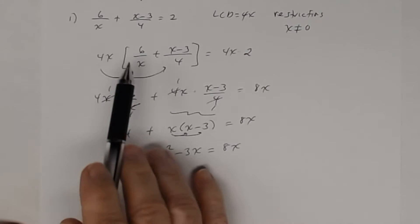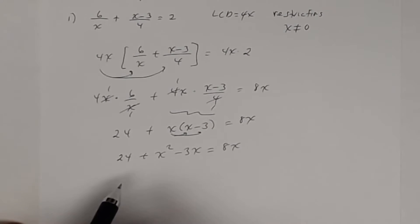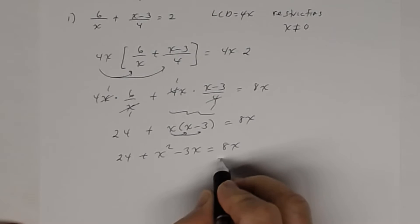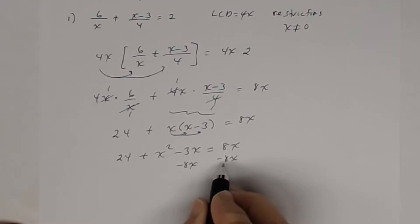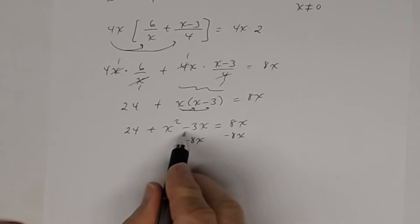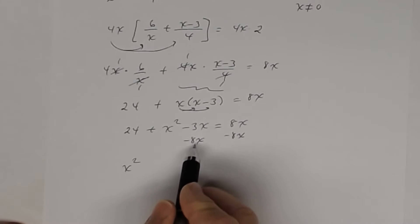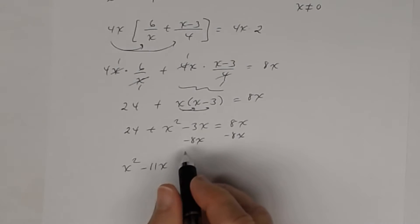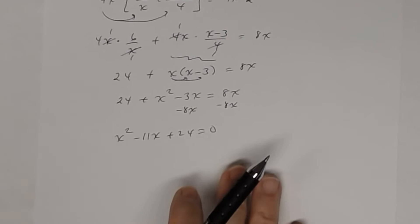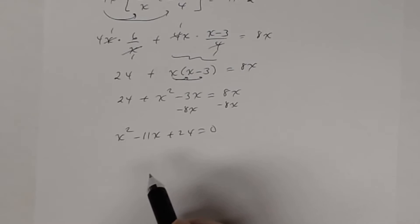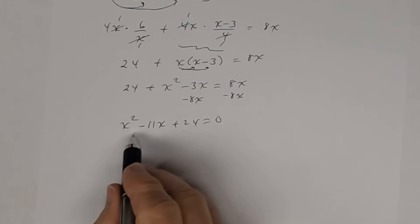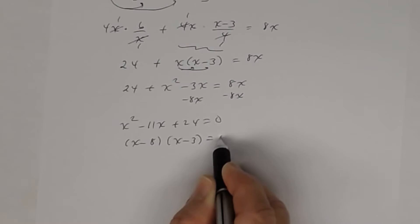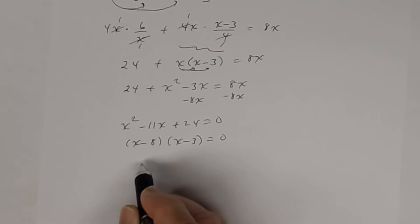Distributing gives 24 plus x squared minus 3x equals 8x. Notice we went from a rational equation to a quadratic equation. To solve it, put it in standard form by subtracting 8x from both sides. Combining like terms in descending order: x squared minus 11x plus 24 equals zero. This is factorable: (x minus 8)(x minus 3) equals zero.